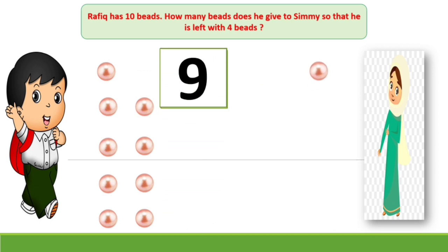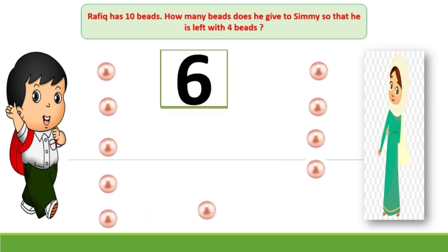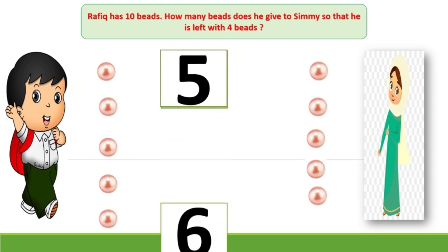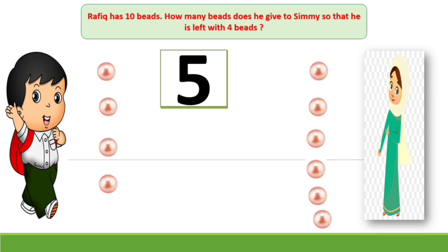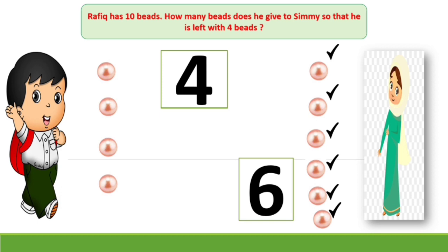When he gives 1 more bird to Simi, he has 8 now. When he gives 1 bird to Simi, now he has 7. When he gives 1 bird to Simi, now he has 6. When he gives 1 bird more, now he will have 5. When he gives 1 bird to Simi, now he will have 4. Let's count the number of birds Simi has: 1, 2, 3, 4, 5 and 6. If Rafiq gives 6 birds to Simi, then he is left with 4 birds.